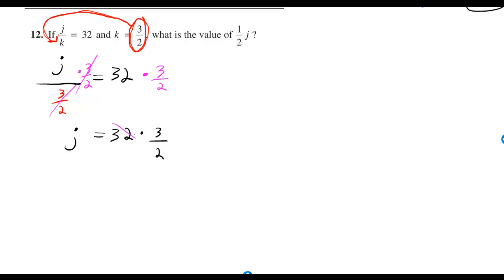And 32 over 2 is 16, and 16 times 3 is equal to 48. So j is equal to 48.